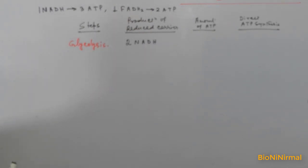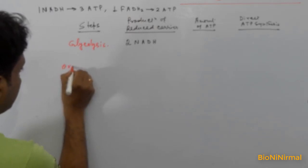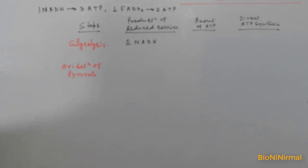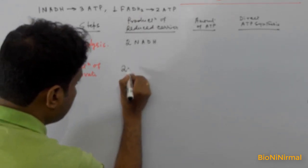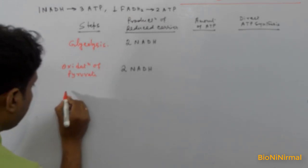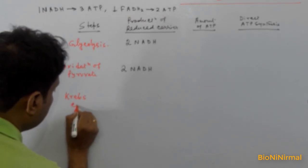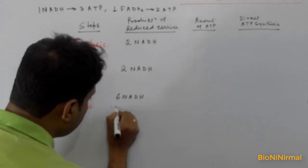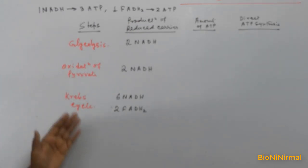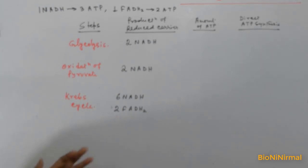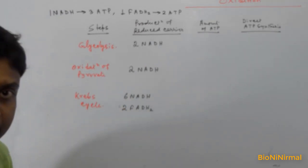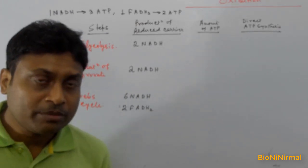The next step is oxidation of pyruvic acid, which also produces two molecules of NADH. The last step is the Krebs cycle, which produces six molecules of NADH and two molecules of FADH2. So in summary: glycolysis produces two NADH, oxidation of pyruvate produces two NADH, and the Krebs cycle produces six NADH and two FADH2.